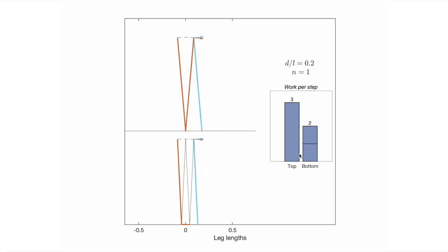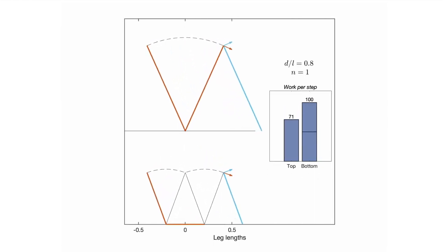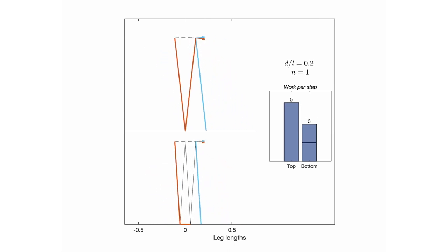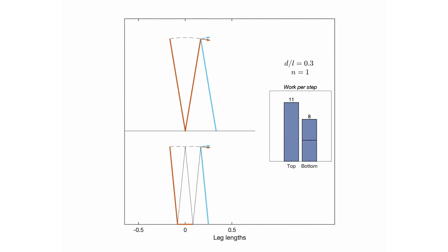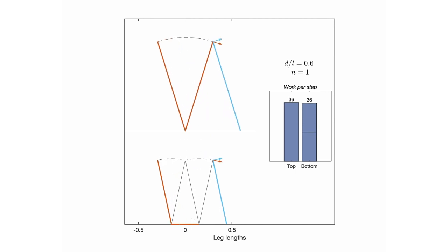We can also see the work changing as the step length varies. When the step length is small, plantigrady is actually cheaper, but when the step length gets big, the no-foot condition becomes cheaper. So there is a point where both conditions cost equal amounts of work.